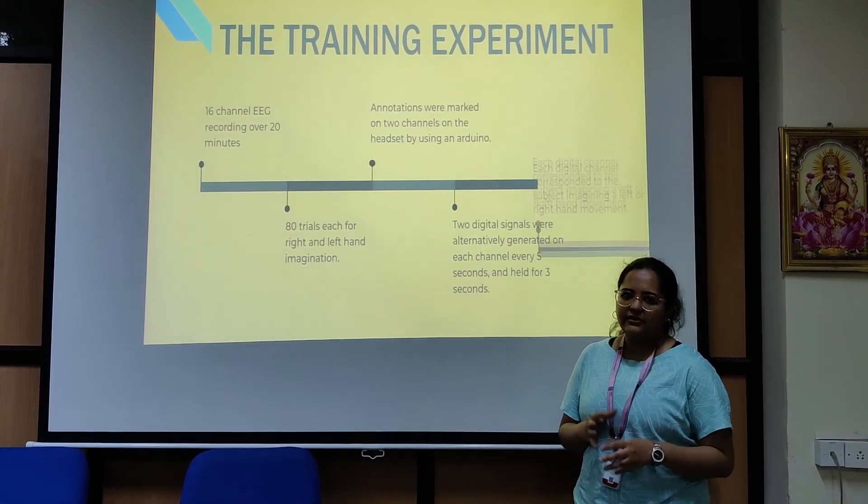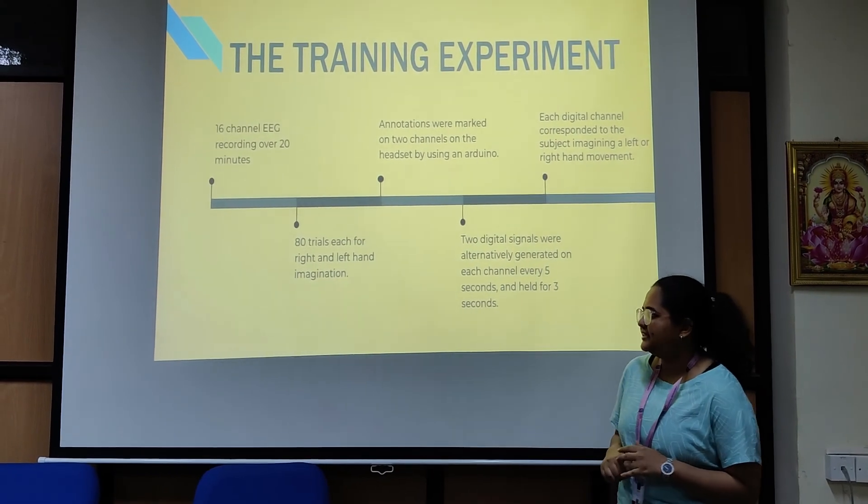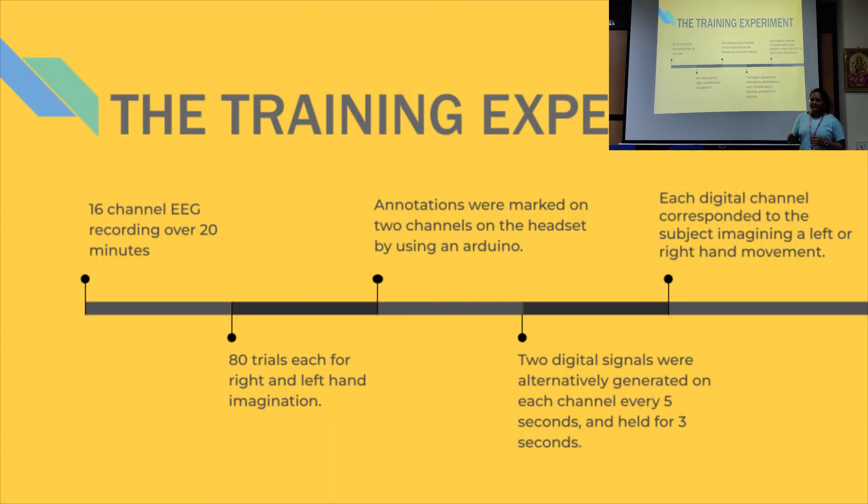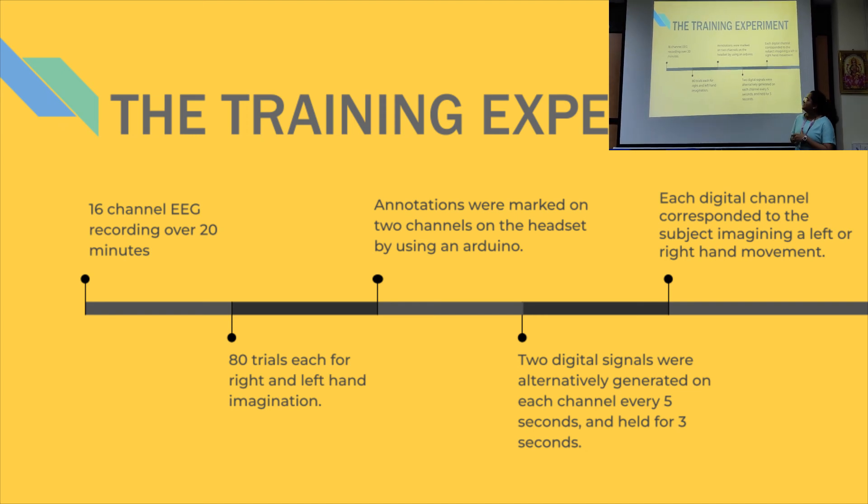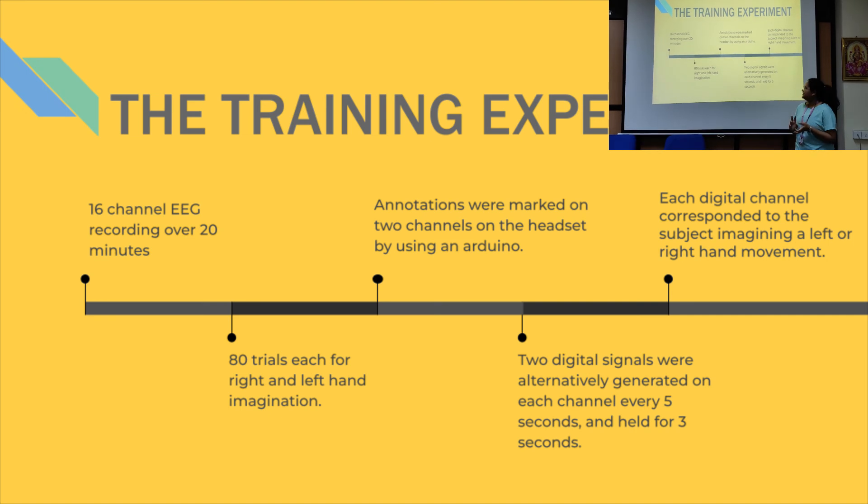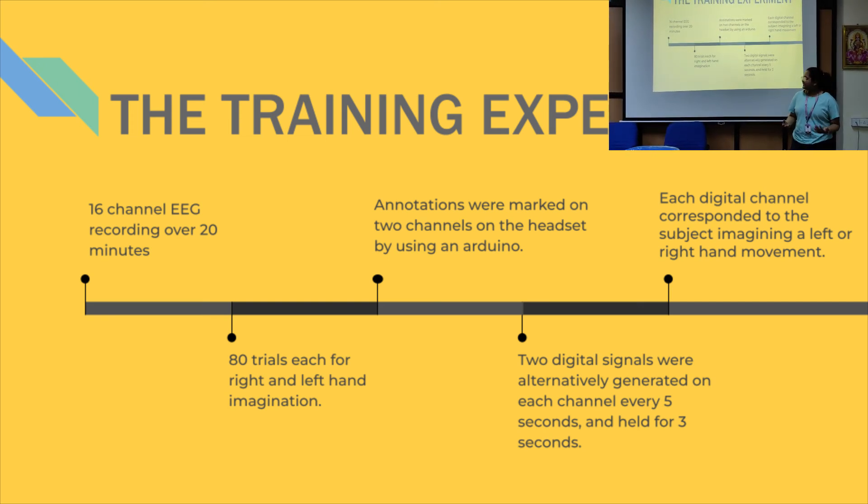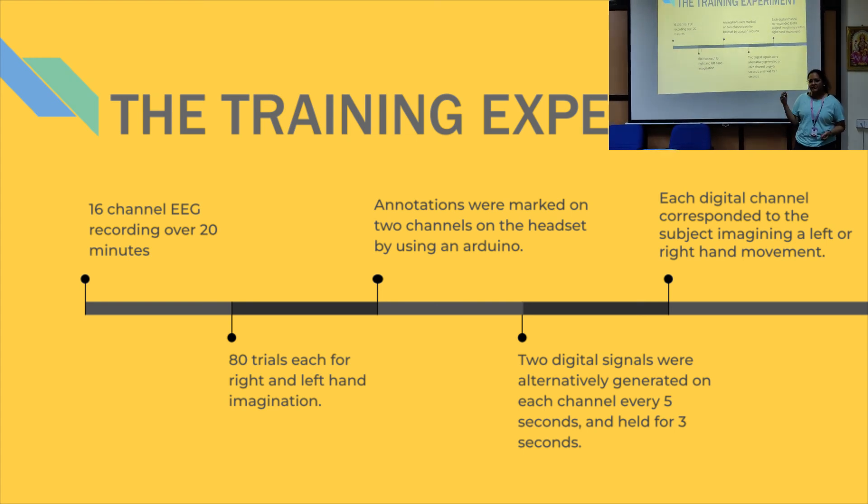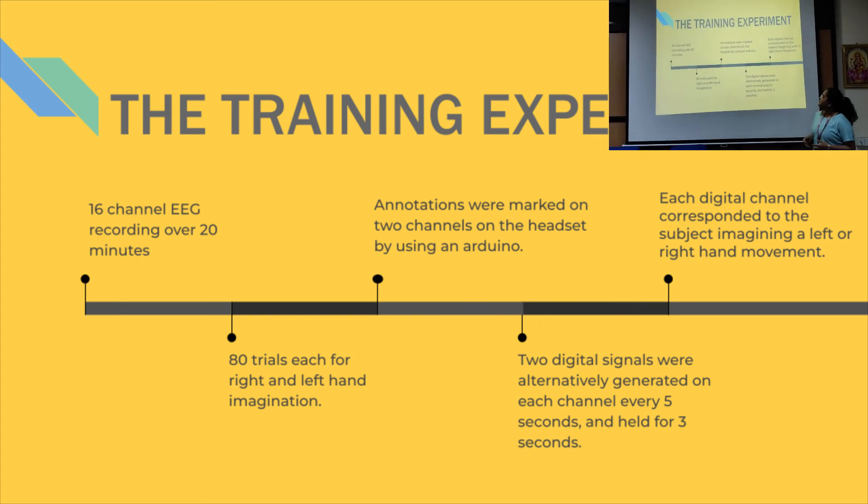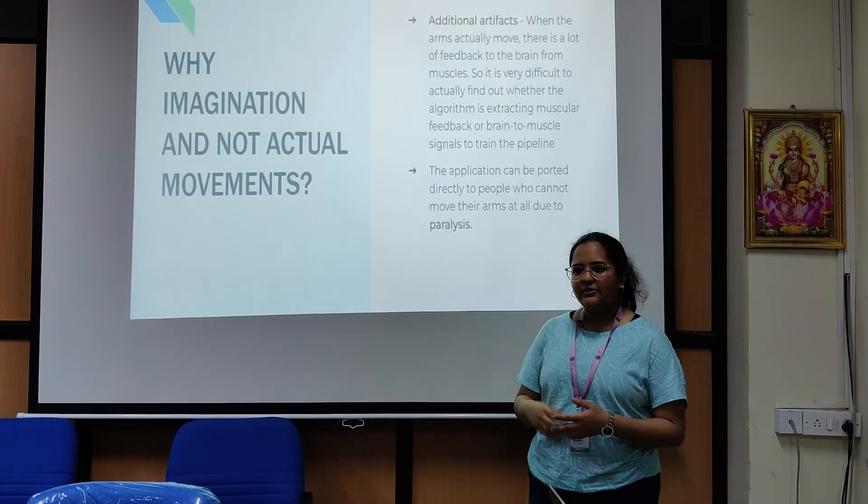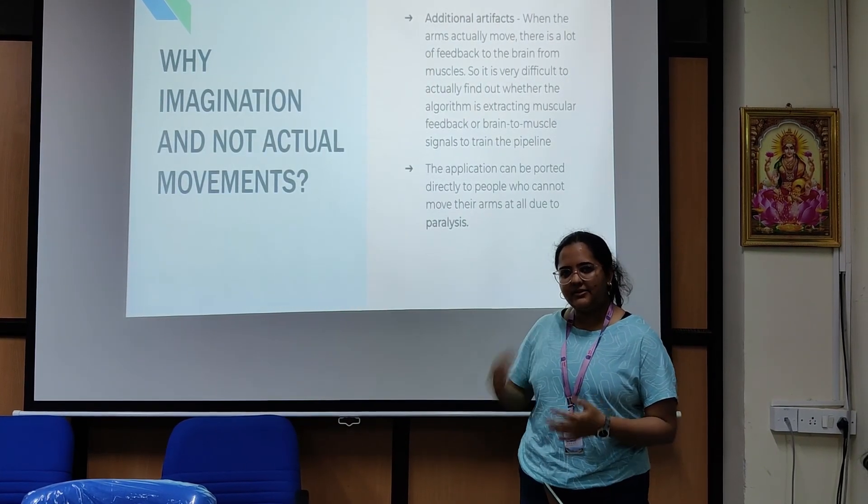Firstly, we did a recording of over 20 minutes on a 16-channel EEG with 80 trials for each right hand and left hand imagination. And we added annotations with an Arduino on two channels of EEG headset. Through this, two digital signals were sent alternately for the left and right every 5-second interval. Each of these signals lasted for 3 seconds. So during each 3 seconds, the subject imagined moving the right hand and left hand alternately. We actually use this imagination of hands which is not actual hand movements. Because when you're moving your hands, it actually refracts from the muscle into the brain. And what we actually need is signals from the brain to the muscle.